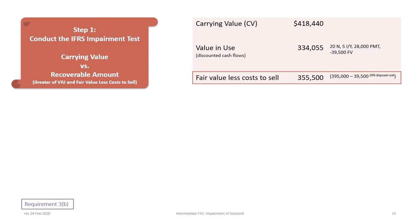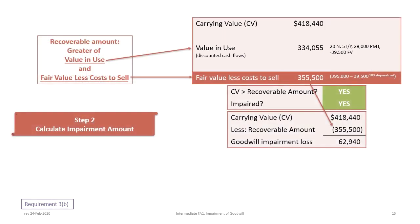Next, we look at fair value less cost to sell. The fair value is $395,000, less the cost to sell of $39,500 — which is 10% of $395,000 — giving us $355,500. The recoverable amount is the greater of the value in use ($334,055) and the fair value less cost to sell ($355,500). Because $355,500 is greater than $334,055, the recoverable amount is based on the fair value less cost to sell.